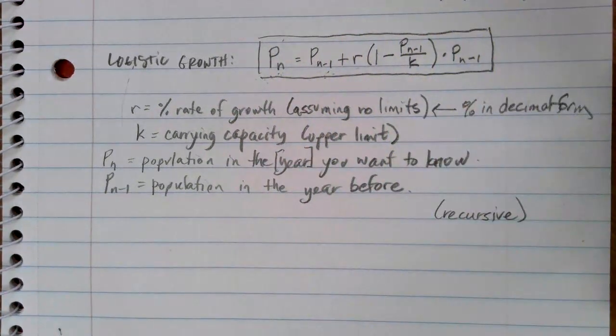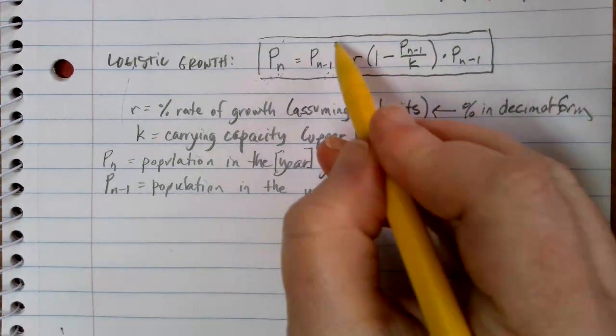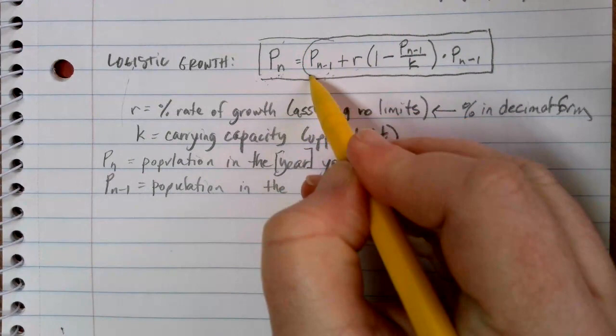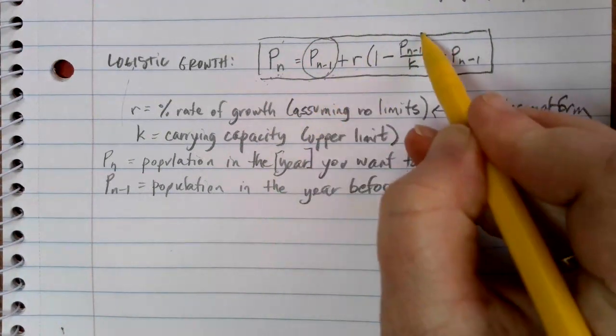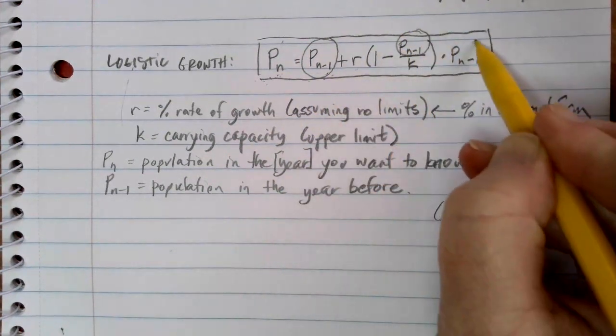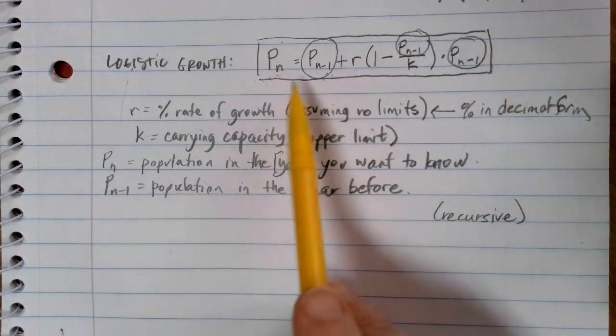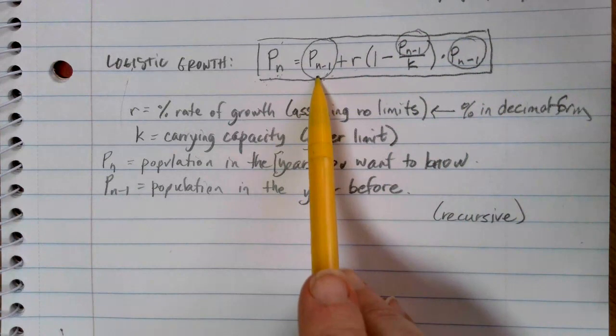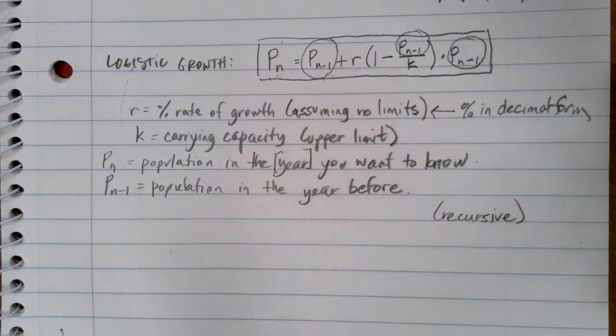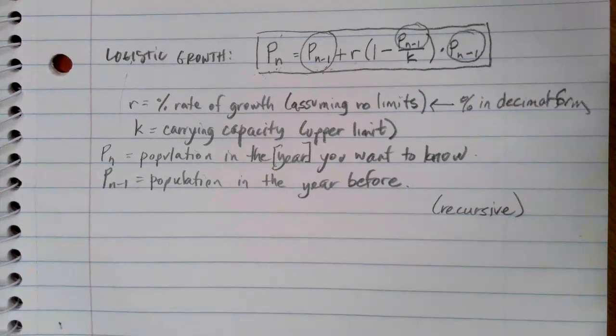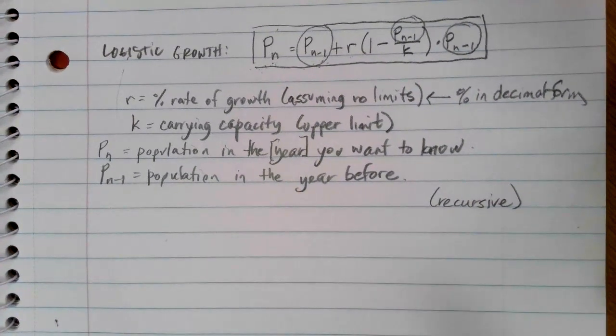The other thing that I want you to notice here as you're looking at this general formula is the fact that this P of n minus one shows up three different times in my equation. You see that? So whatever number I'm putting in for the year before, I'm going to use it three different times in my formula. Let's go through a quick example here so you can kind of see where these formula pieces work.